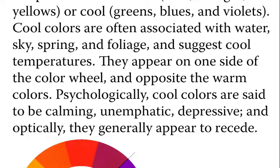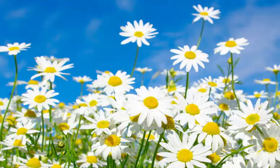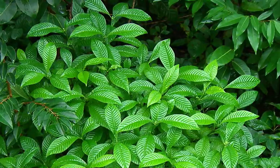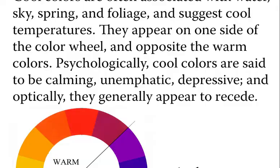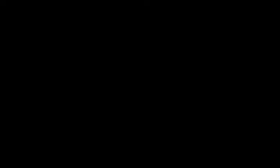Cool colors are often associated with water, sky, spring, and foliage, and suggest cool temperatures. Psychologically, cool colors are said to be calming, unemphatic, and depressive. Optically, they generally appear to recede.